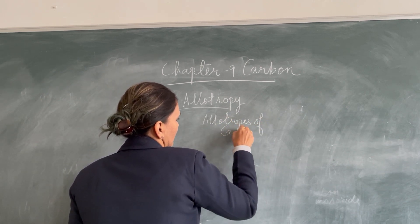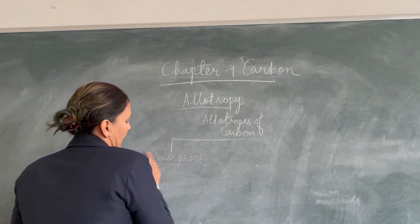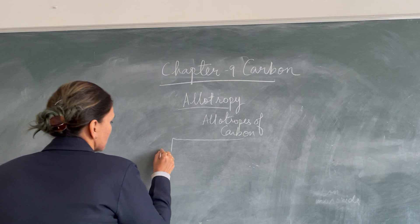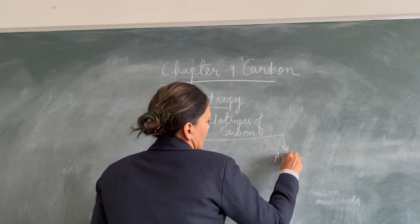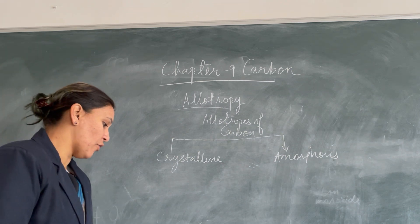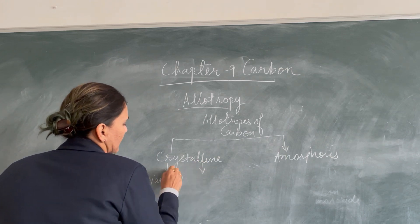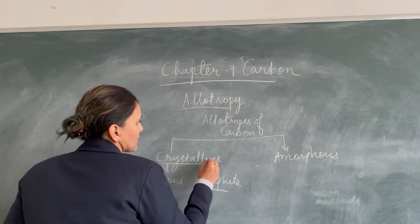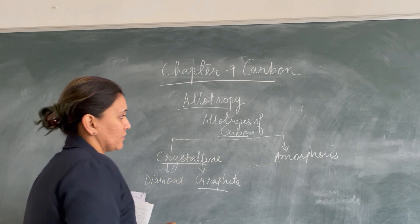The allotropes of carbon can be divided into amorphous and crystalline forms. Since we were continuing with the crystalline form, we write crystalline first and then amorphous. Carbon can exist in these two different forms. In the crystalline form we have already studied about diamond in the previous video, and today we are going to study about another crystalline form of carbon, that is graphite.